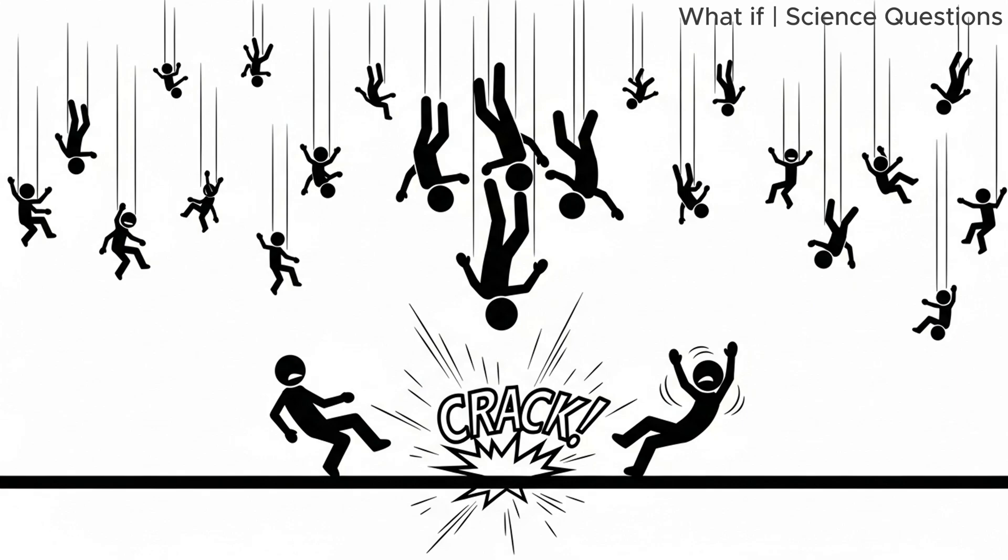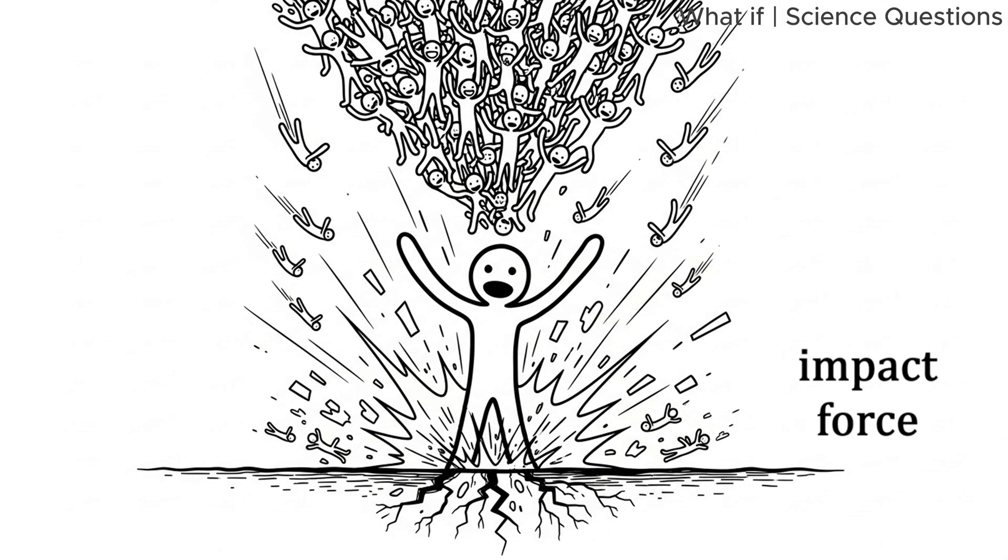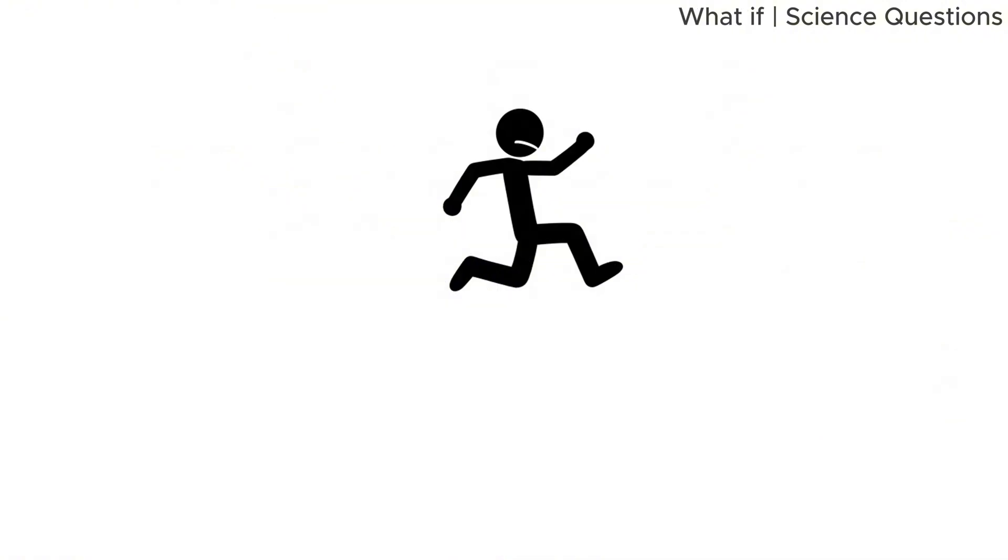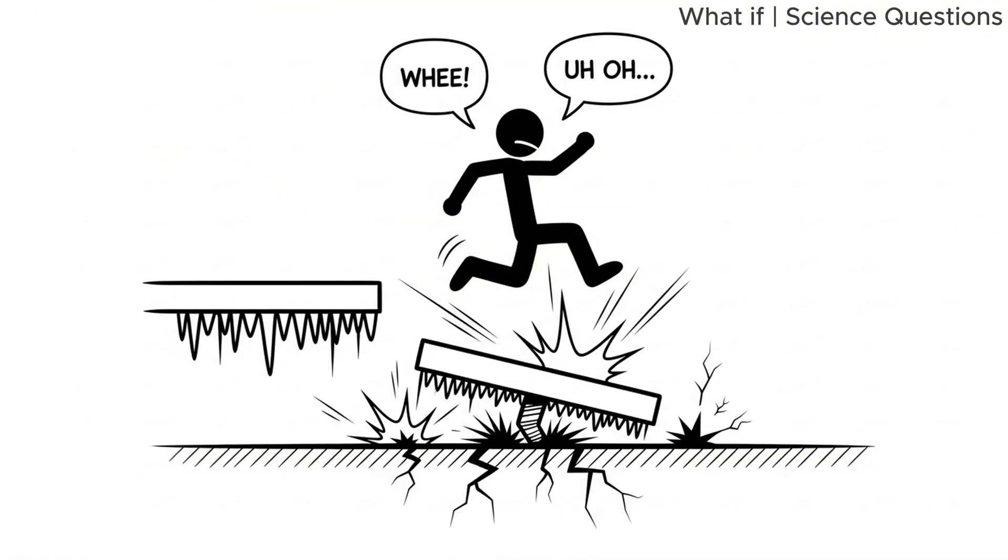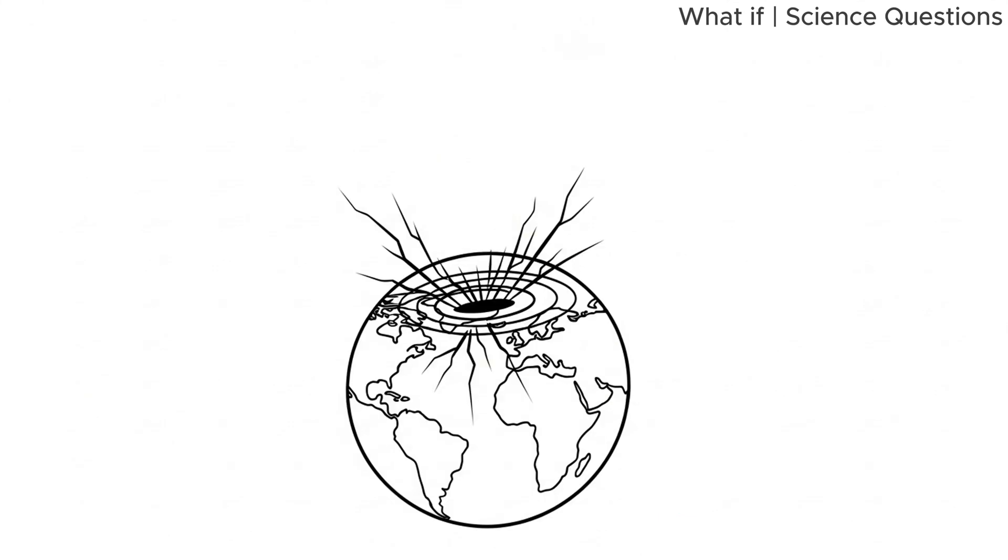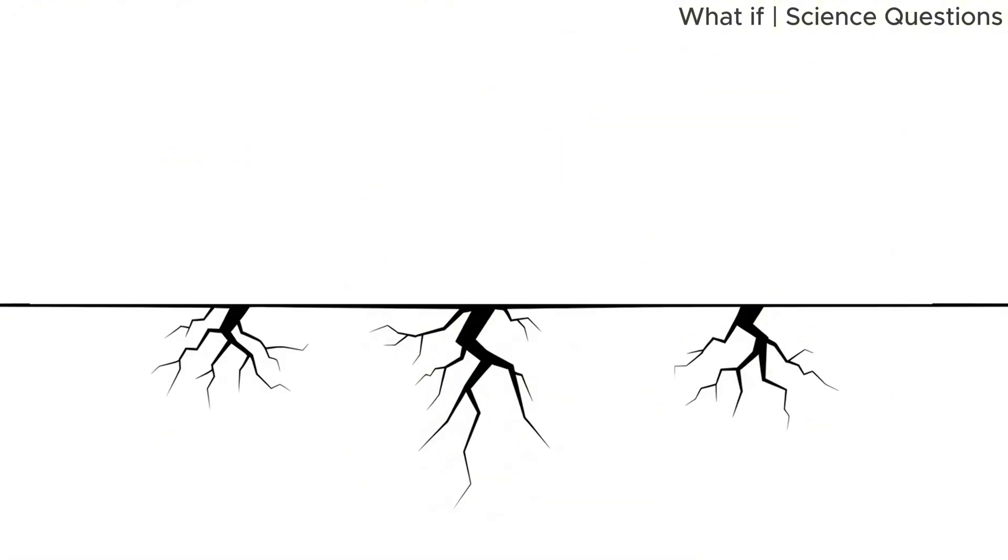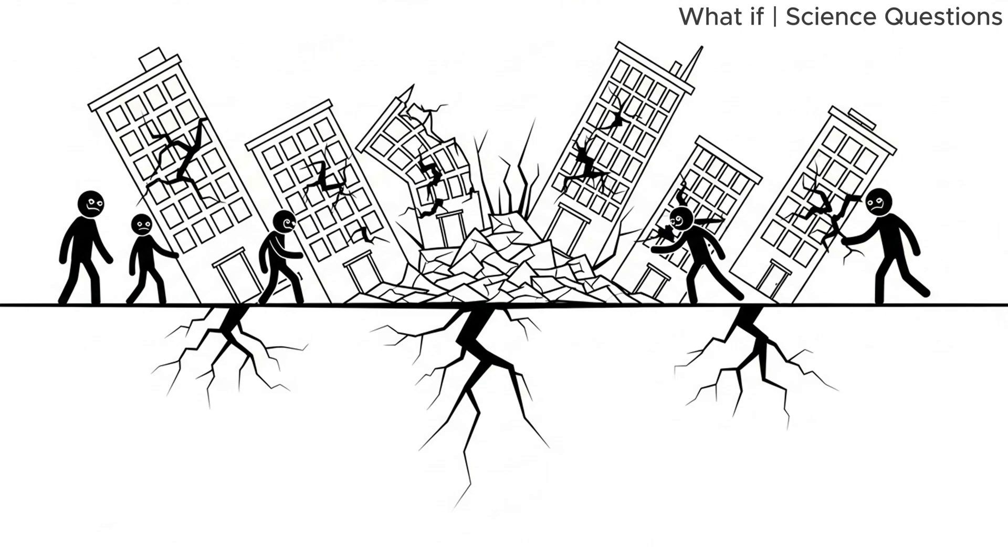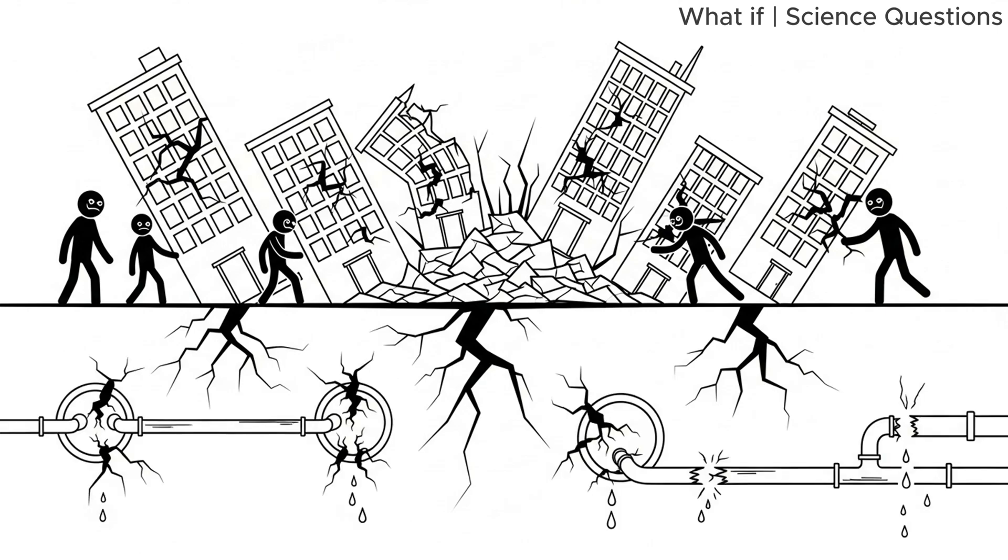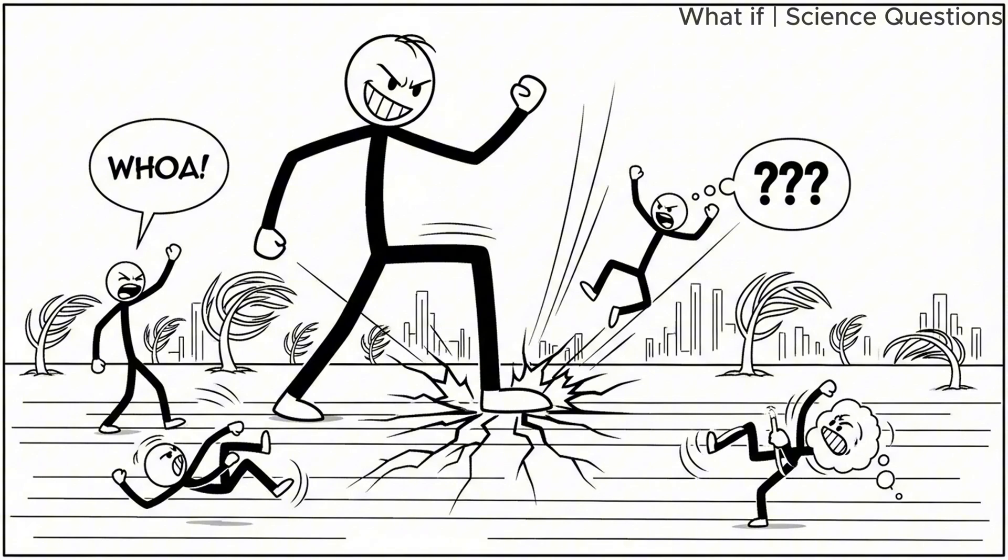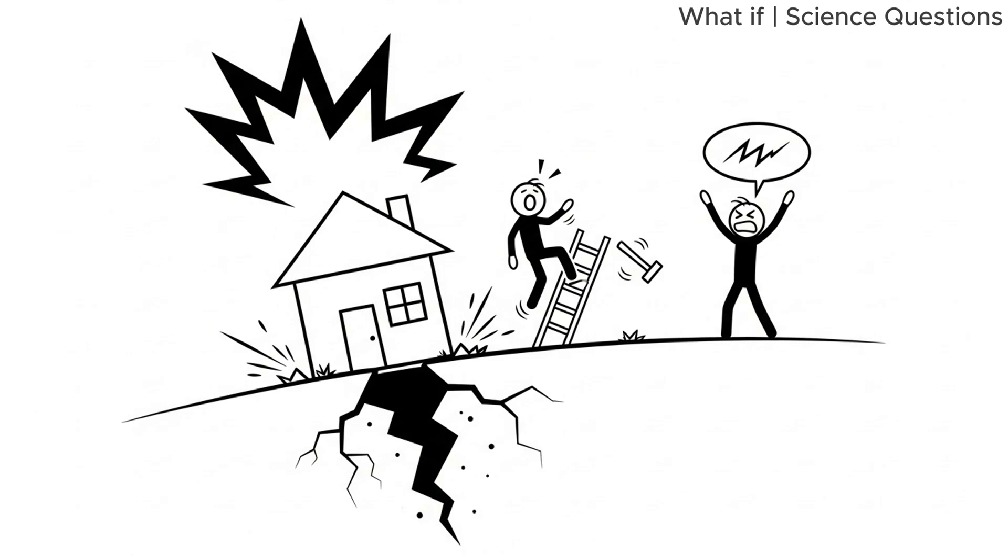But even if we avoid total human pileup, we still run into another problem. When we all land, the force has to go somewhere. The human body absorbs shock fairly well, but the platform and the ground beneath it might not. The impact would be concentrated in one place, like slamming a hammer into the planet. The ground might crack. Structures nearby could collapse. Underground systems like subways or pipelines might rupture. You'd essentially create a mini-earthquake. Not strong enough to split continents, but definitely strong enough to ruin someone's day.